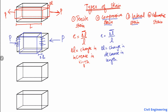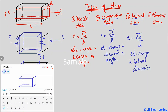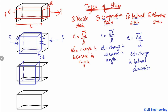The third type is lateral strain. By its name, we understand it refers to the change in the lateral dimension of the object. It is written as e equals Delta D divided by D, where Delta D is the change in lateral dimension. When the lateral dimension changes, we call that lateral strain.